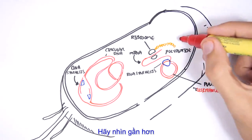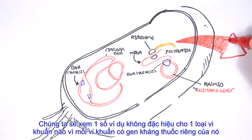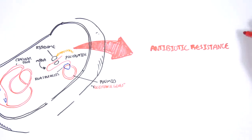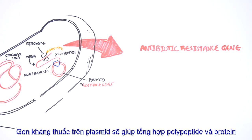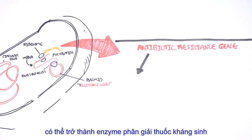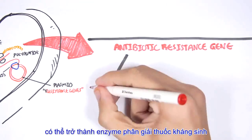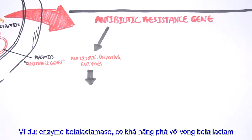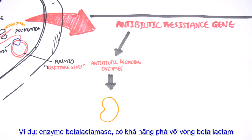Let's have a closer look by zooming in. The antibiotic-resistant genes, usually found on the plasmid, result in the synthesis of proteins and polypeptides that can form and become an antibiotic-degrading enzyme. A good example of these are beta-lactamases, which essentially break beta-lactam rings.